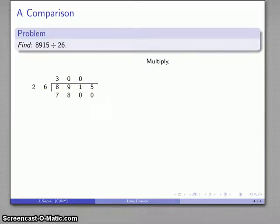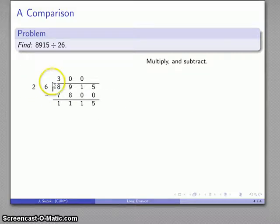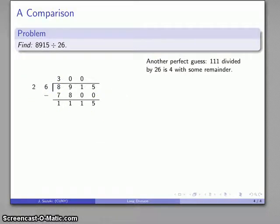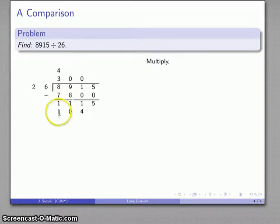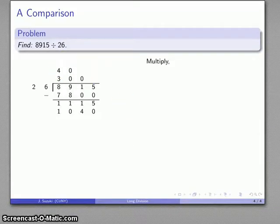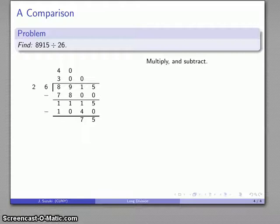26 into 111, I guess perfectly and without hesitation: 4. 4 times 26 is 104, and again to get it into this place I actually need that to be a 4 tens, so that's going to be 40. I'll multiply and subtract. And again I guess the quotient without hesitation and perfectly. 26 into 75 goes 2 times.